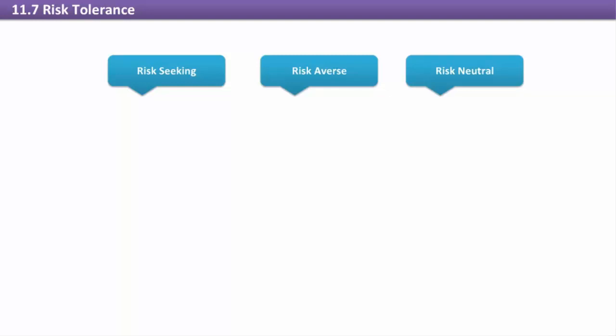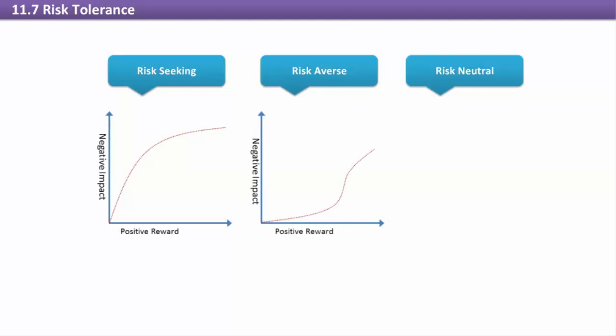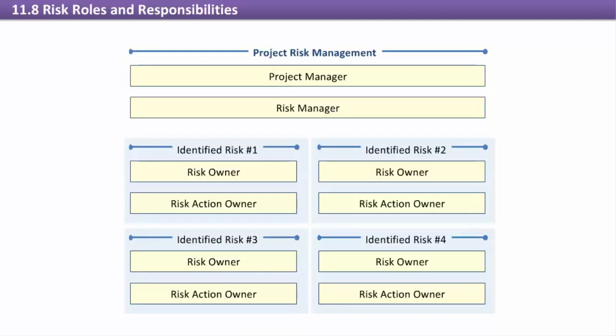As part of balancing risk, the project manager has to often facilitate an agreement between risk-averse and risk-tolerant viewpoints. Risk Seeking: These people have a willingness to accept risks even when the benefit doesn't seem worth the negative impact. Risk Averse: These people have a tendency to avoid risks even when the reward outweighs the potential negative impact. Risk Neutral: These people generally have a logical, balanced approach that is weighted against the pros and cons of the risk.